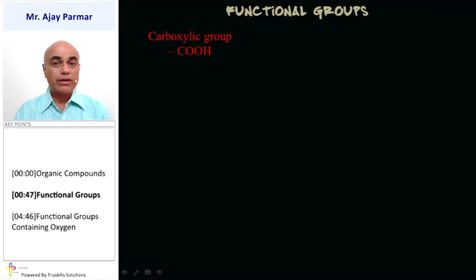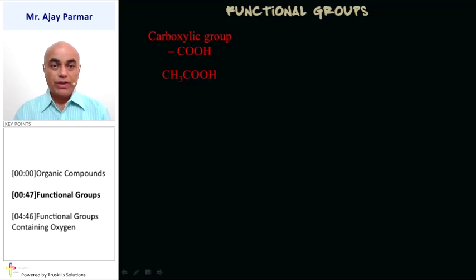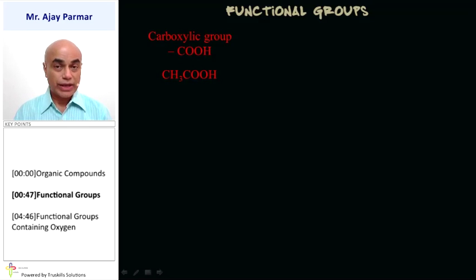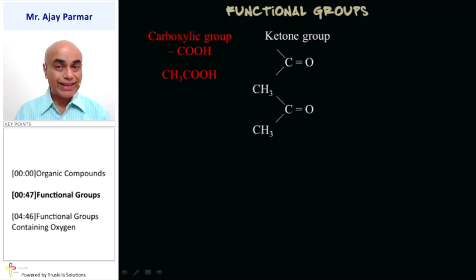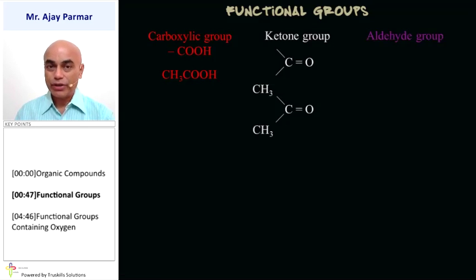Some examples of functional groups: the carboxylic group, that is COOH. One example is acetic acid, also known as ethanoic acid, the second member of the carboxylic group. The ketone group is C double bond O; one example is propanone, that is CH3COCH3, also known as acetone. We shall discuss about this a little bit later on in the same topic.